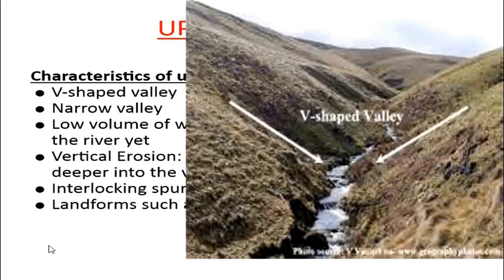You also find that in the upper course the valley is very narrow. The reason for that is because the river is not eroding on the sides, but rather eroding vertically deeper into the valley — that's why the river is very narrow and not wider in comparison to the other courses. Here you have vertical erosion, meaning the river is eroding downwards, almost as if you are digging deeper and deeper. That is what we refer to as vertical erosion, and it's usually influenced by gravity as the river flows downstream.